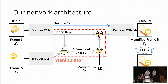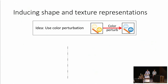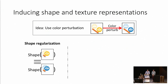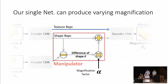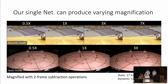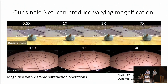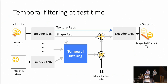We use an L1 error loss of the synthesized magnified frame. However, this alone is not enough to induce a meaningful disentangled representation of texture and shape, so we use color perturbation: if two frames have the same displacement, they should have the same shape representation regardless of their color. Additionally, we impose that two frames should have the same texture representation if their colors are the same even with different displacements. The proposed manipulator is simple yet can handle wide variation of magnification factor without retraining. By virtue of the linearity of the manipulator, the learned representation is linear enough that replacing the subtraction operation with a linear temporal filter at test time is compatible with our network, allowing much more general temporal operations.